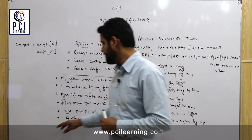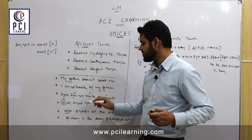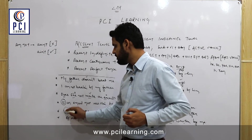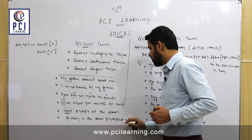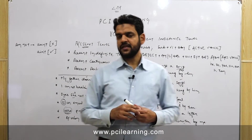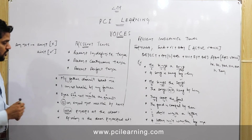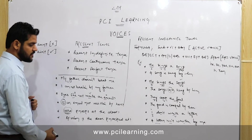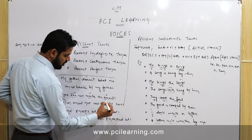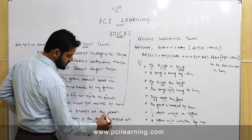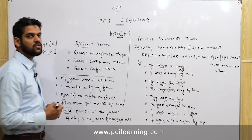The last example: 'Who knocks at the door?' We replace 'who' with 'by whom' and it comes at the beginning. The passive voice is: 'By whom is the door knocked at?' The door becomes the subject, followed by the helping verb 'is', and then the third form 'knocked at'.